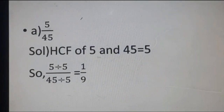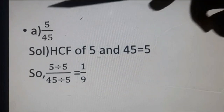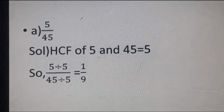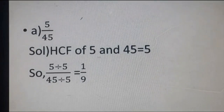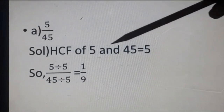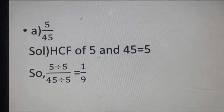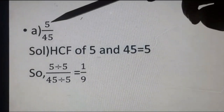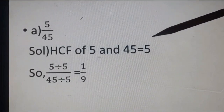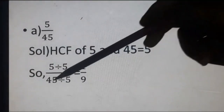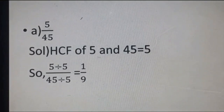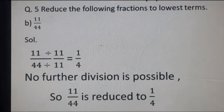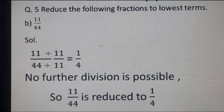This is our second method for converting into lowest term. For 5 upon 45, we find the HCF of 5 and 45. HCF is 5 because 5 nines are 45 — the last divisor is 5. We divide the fraction by its HCF: 5 divided by HCF, 45 divided by HCF, giving 1 upon 9. You can take method 1 or method 2.